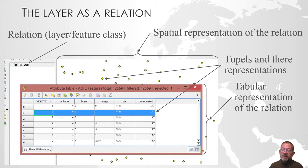So here we see the layer as a representation of the relation. So we have a relation, and it's represented here as each row is a tuple in our relation. And this one that is marked as blue in the attribute table is the one that is marked as yellow in the map.